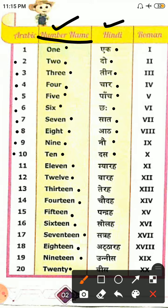Isi tarha 11 ko bolenge aap: gyarah. 12, barah. 13, terah. 14, chaudah. 15, pandrah. 16, solah. 17, satrah. 18, atharah. 19, unees. 20, bees.